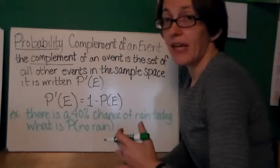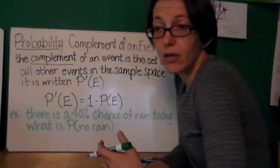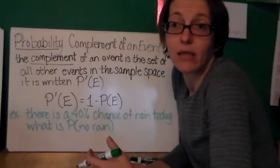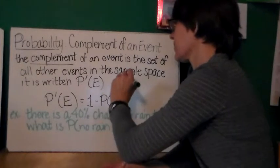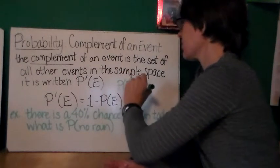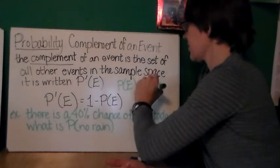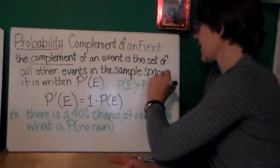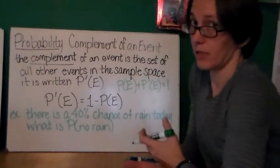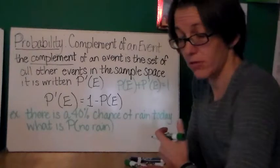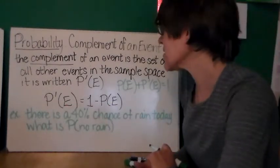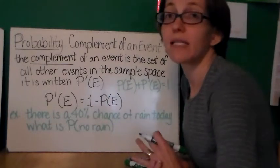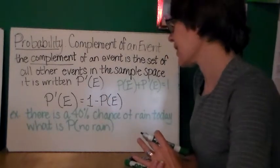Now, since an event either happens or it does not happen, that tells us that the sum, probability of the complement have to add up to one. Something's going to happen. Either the event happens or it doesn't. So if we want to find the probability of the complement, we can just take one and subtract the probability of the event.